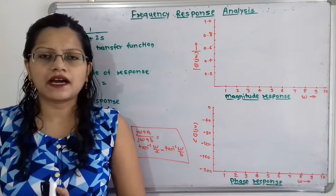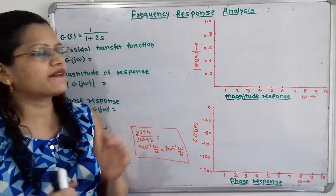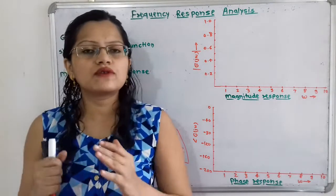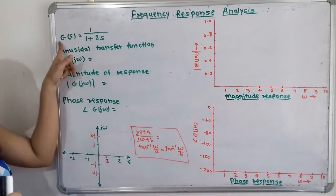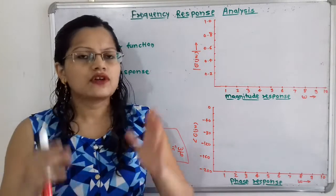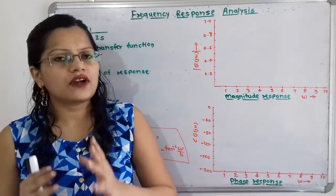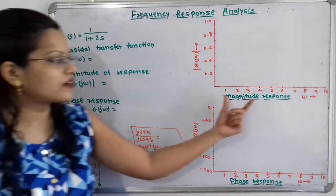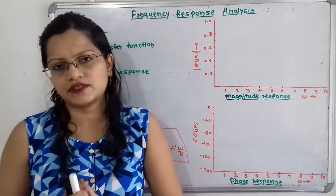Hello friends, this is Priyanka. Today we are going to solve a problem on frequency response analysis. In this video, we have to draw the frequency response for a given system G(s) = 1/(1+2s). We can plot this in two steps: first we have to plot the magnitude response, and then we have to plot the phase response.